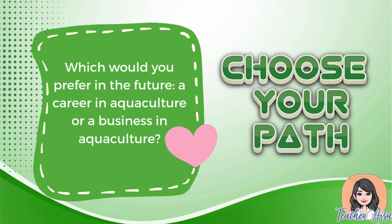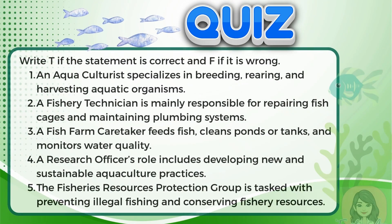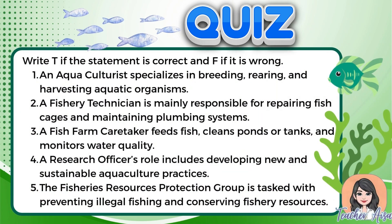For our quiz, write T if the statement is correct and F if it is wrong. One: An aquaculturist specializes in breeding, rearing, and harvesting aquatic organisms. Two: A fishery technician is mainly responsible for repairing fish cages and maintaining plumbing systems. Three: A fish farm caretaker feeds fish, cleans ponds or tanks, and monitors water quality. Four: A research officer's role includes developing new and sustainable aquaculture practices. Five: The fisheries resources protection group is tasked with preventing illegal fishing and conserving fishery resources.